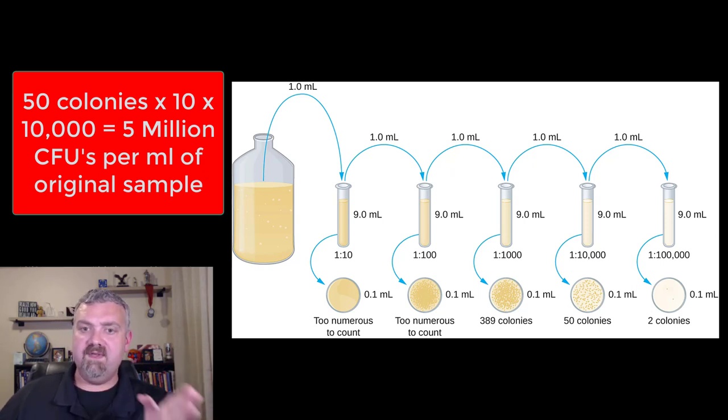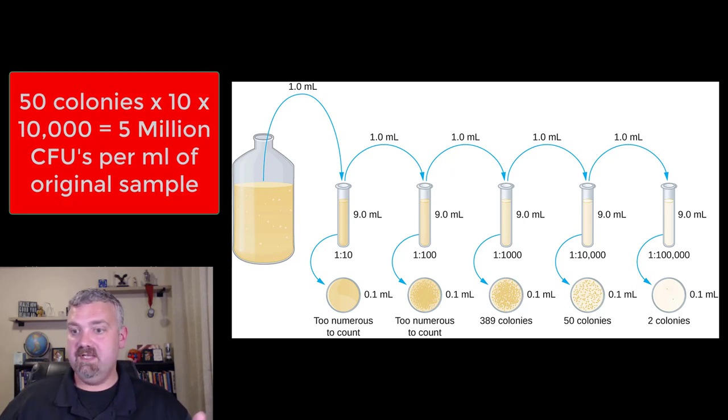So if you wanted to know how many colony forming units were in a milliliter of that original sample on the left, you would take the 50 colonies you counted times 10 to get back to that full milliliter and then times 10,000. There'd be 5 million. There's no way to count 5 million colony forming units per milliliter. So that's why we have to use these serial dilutions.